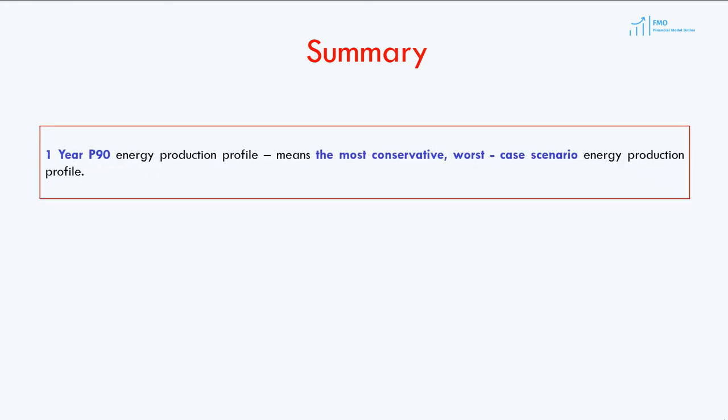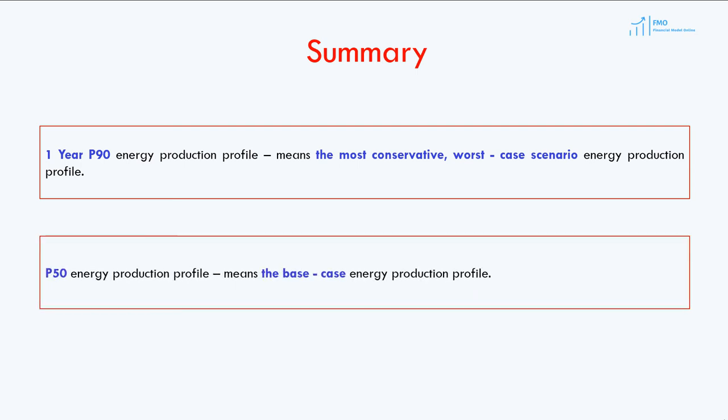To summarize: a 1-year P90 energy production profile represents the most conservative, worst-case scenario energy production profile, and P50 represents the base-case energy production profile.